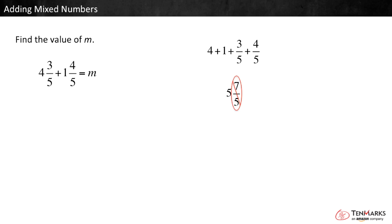But we don't want to have a fraction greater than 1 in our mixed number. So, rewrite 7 fifths as 1 and 2 fifths. Then add it to 5. Our final sum is 6 and 2 fifths. That is the value of m.